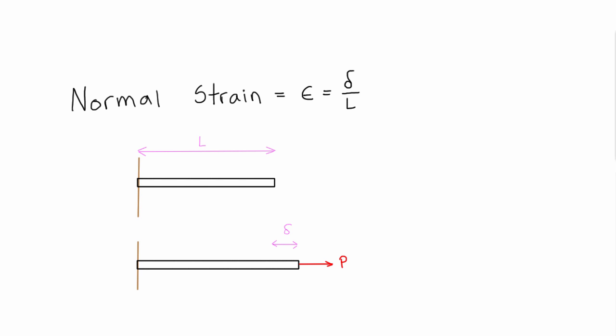So let's attach some numbers to this. If we say that our original length of this member was 1.5 meters, and let's say after we apply this load here we get a delta of 2.5 millimeters, so that would be 0.0025 meters.